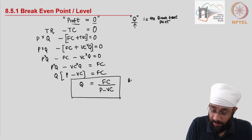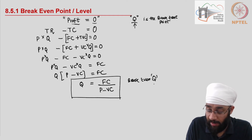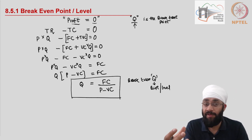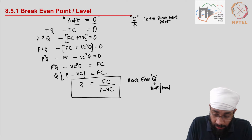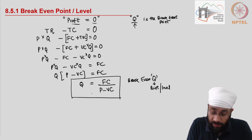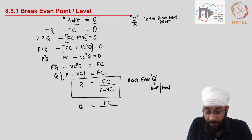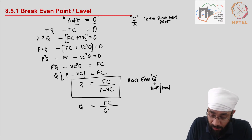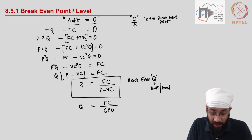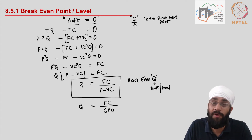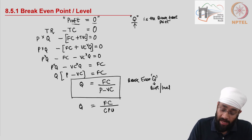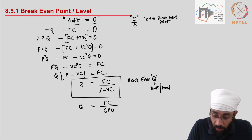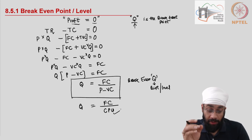The break-even Q is the level at which total revenues are breaking even with total cost — no profit, no loss. Now, Q = Fixed Cost divided by (P − Vc). What is P minus Vc? P minus Vc is contribution per unit. So that's how contribution plays a part. If you know P − Vc and fixed cost, you can do a back-of-the-envelope calculation and figure out the break-even point.